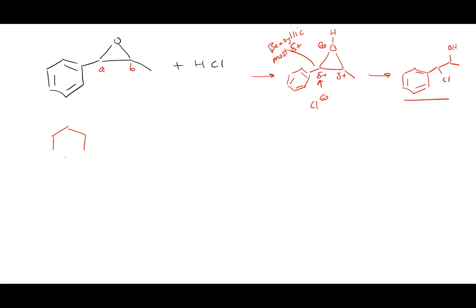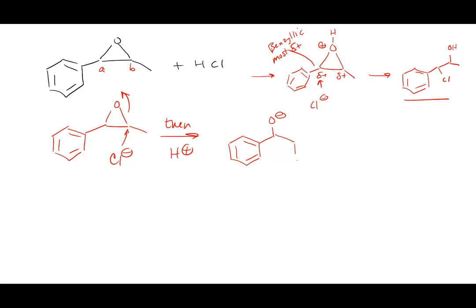If I change it and do this reaction with Cl⁻ and then add H⁺ afterward, now what comes into play? The steric hindrance of the benzene ring. Benzene ring versus methyl group — the benzene ring is more sterically hindered, so the chloride comes in and attacks the least hindered carbon, giving us an O⁻. Then when I add H⁺, the chloride ends up adding to B. The steric hindrance argument is best made with Cl⁻ as opposed to HCl.